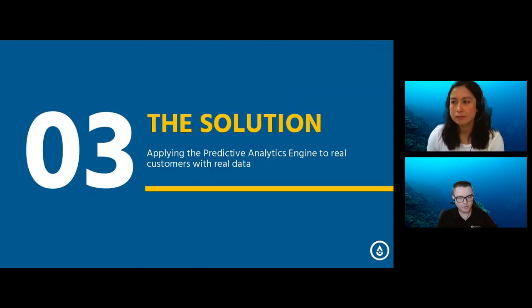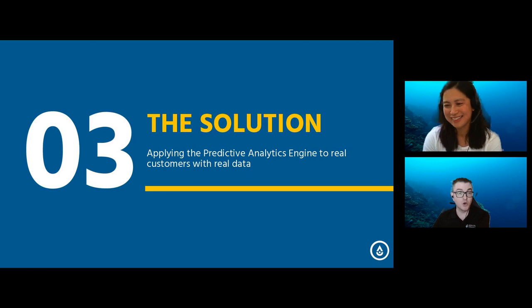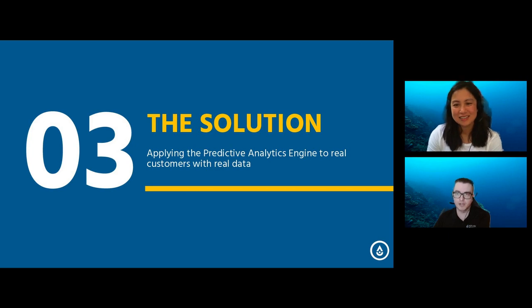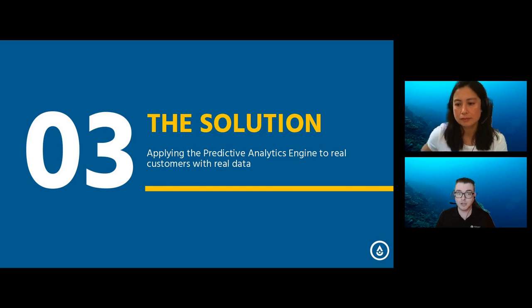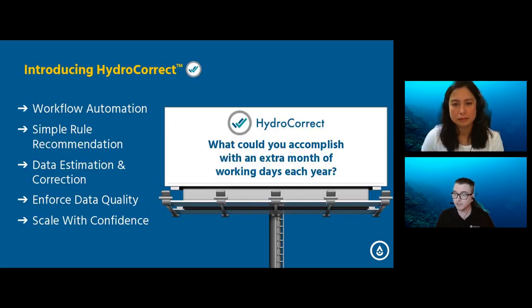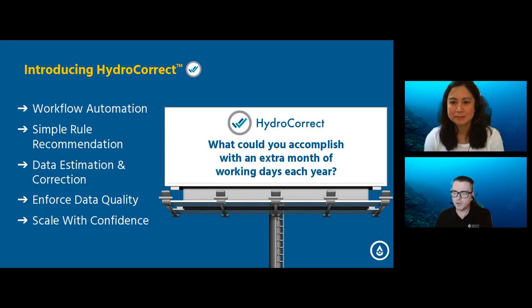Today we wanted to talk about what that next step looks like — not just automation, but enabling a new type of collaboration between humans and machines to free up users to focus on more high-value tasks. Let's jump into an exciting part of today's presentation: we'd like to introduce you to HydroCorrect. We see HydroCorrect as that future state where people are monitoring corrections instead of performing them. We'll then jump into a couple of stories from our pilot program customers.